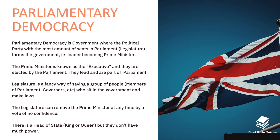In a parliamentary democracy the legislature can remove the prime minister at any time. In the UK this is done by a vote of no confidence — if passed, the prime minister must step down and be replaced by somebody new. The UK also has a head of state, which is the king or queen. At the time of recording we had Queen Elizabeth the Second as our monarch, though she doesn't have much power over day-to-day laws.